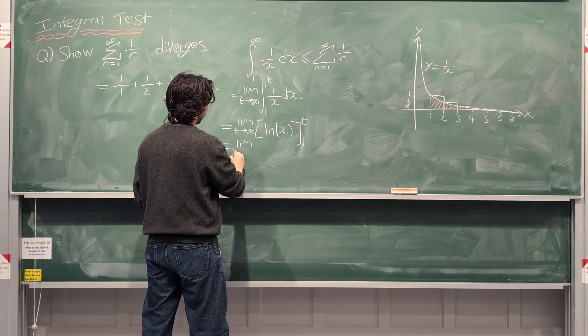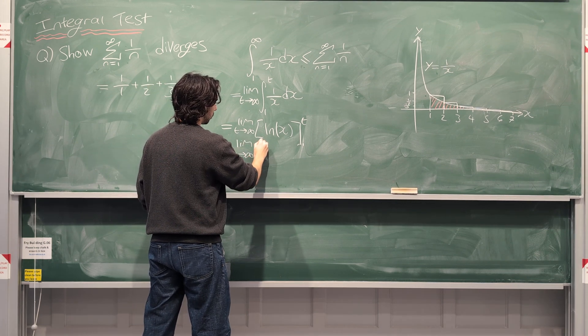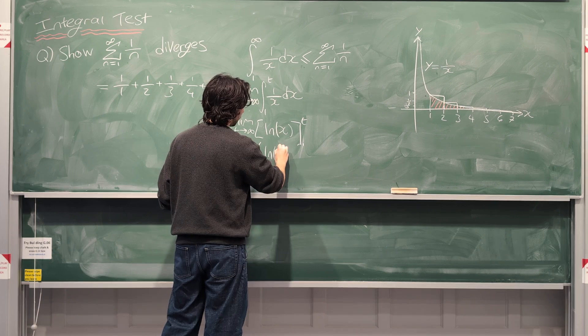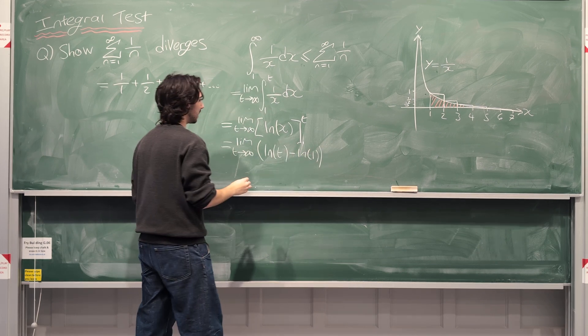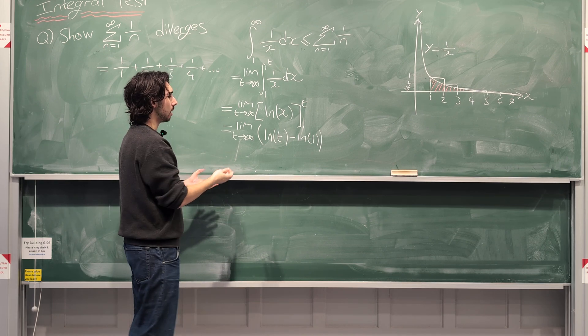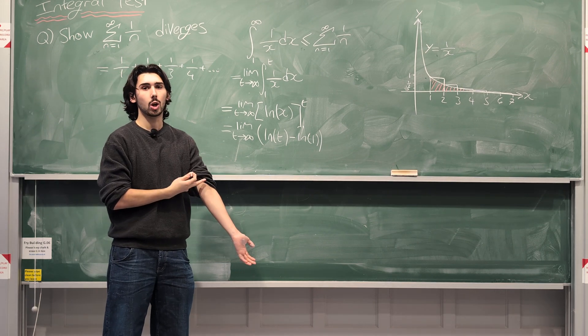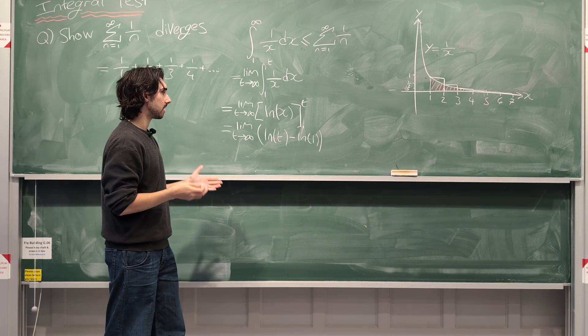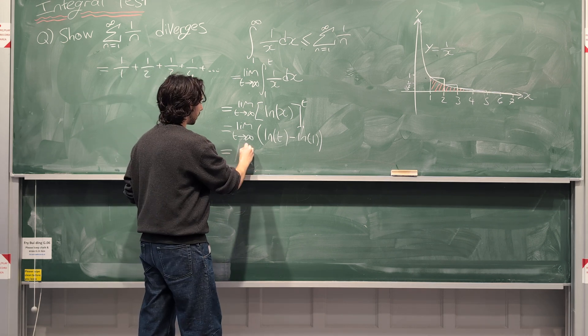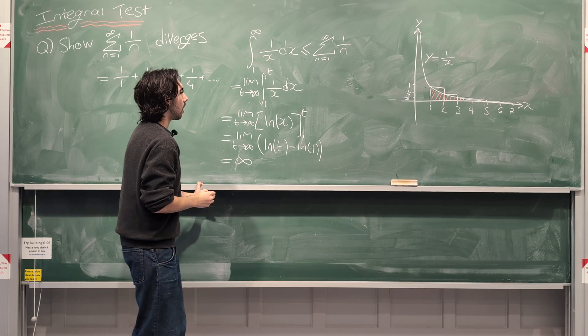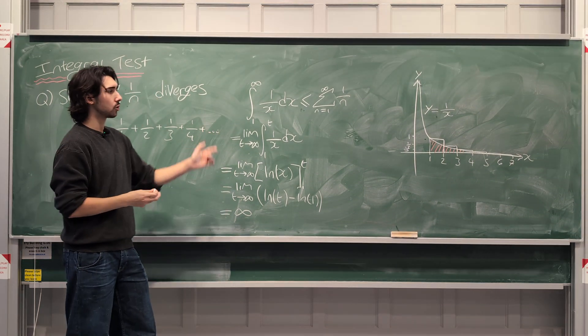And that's from 1 to t. And then we do, we substitute in, so we have the natural log of t minus the natural log of 1. But guys, as t approaches infinity, the natural log of t also approaches infinity. The bigger t is, the bigger the natural log of t is. So this is infinity. This diverges.